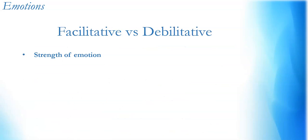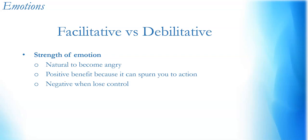Let's take a deeper dive into facilitative versus debilitative emotions. No emotions are bad — anger, sadness, happiness, joy, fear — all of these are natural emotions that we want and need to survive. It's about the strength of the emotion. It's natural to become angry, and that can have a really positive benefit because it can spur you into action to do something about your situation. But it can be debilitative when the strength of the anger gets so strong that we start to lose control of ourselves, what we say, and our bodies. The duration of the emotion matters a lot too.